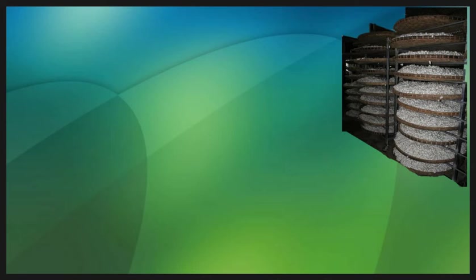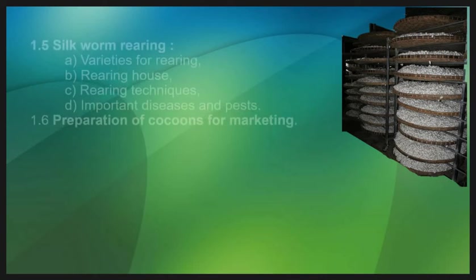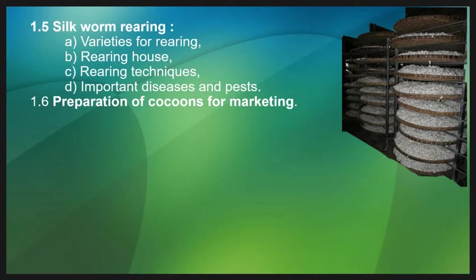Once species selection is done and food is arranged, the next question is how to do rearing. In Topic 1.5, we will learn the different types of rearing methods. We will learn what a rearing house is and how to build it, and we will look at different types of rearing techniques and equipment.